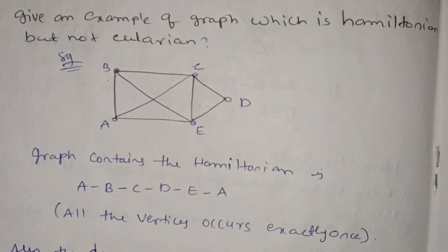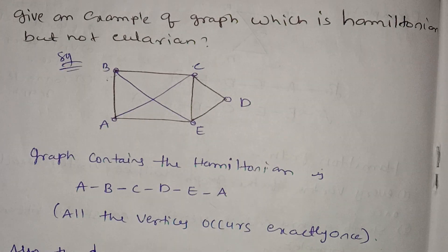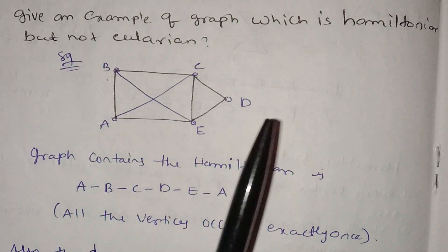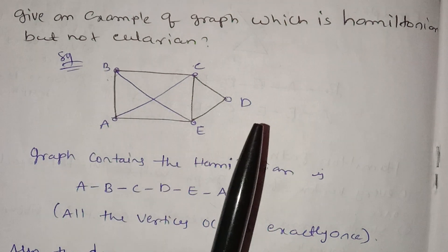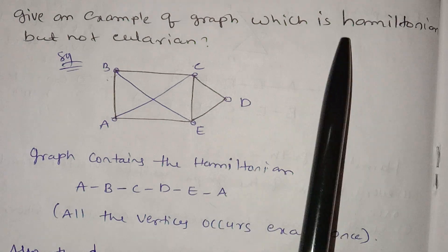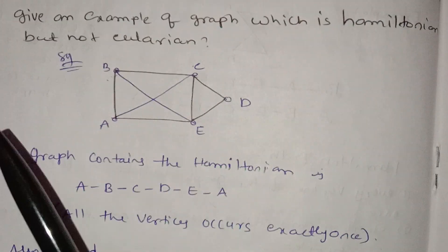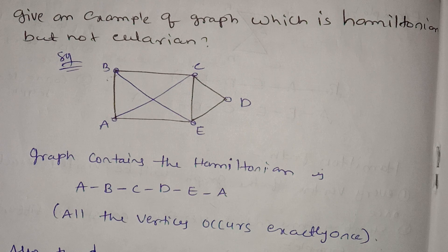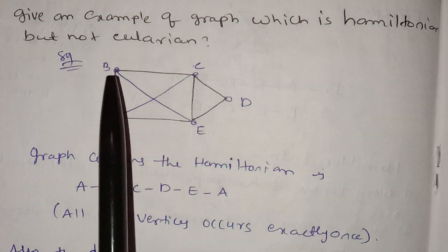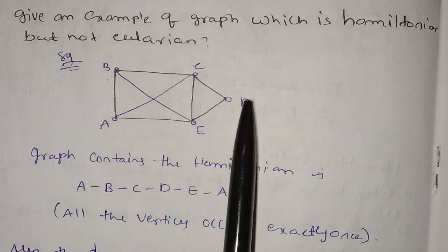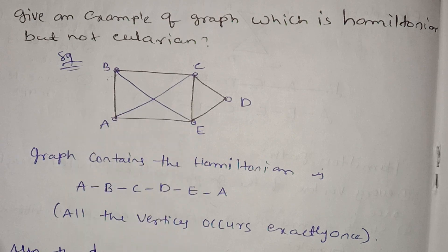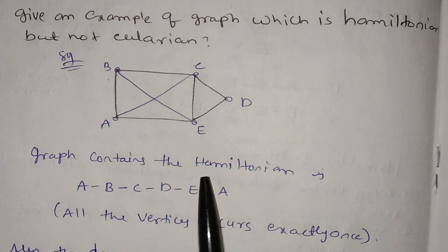The Eulerian graph requires that starting and ending are the same, and every edge is visited once. The vertex sequence is B, C, D, A, C — showing the Hamiltonian path through the graph.